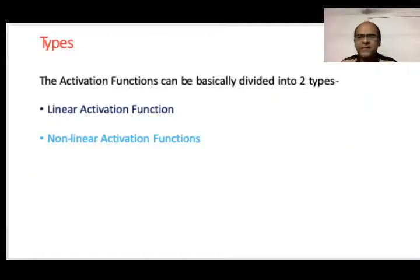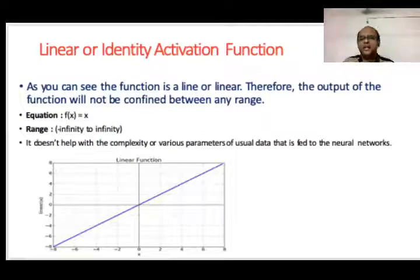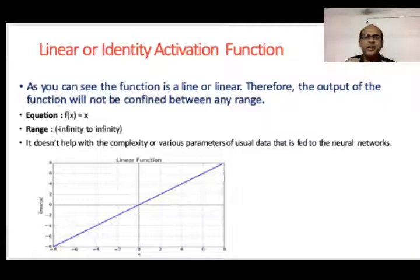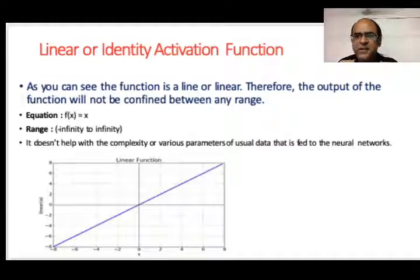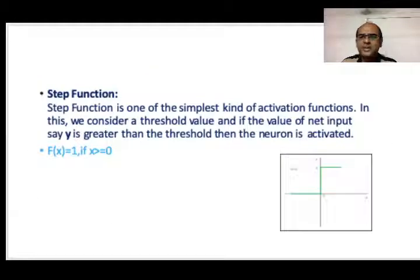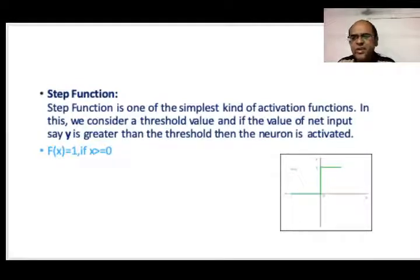There are two types of activation functions: linear and nonlinear. A linear or identity activation function is simply a line, written as f(x) = x, with range from minus infinity to plus infinity — it doesn't help with complexity. The step function is one of the simplest activation functions, where if the net input y is greater than a threshold, the neuron is activated: f(x) = 1 if x ≥ 0, otherwise 0.